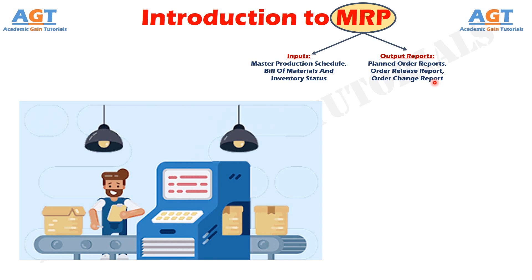Just-in-time is a manufacturing system in which work-in-process inventories are reduced to minimum levels. Small quantities of materials are supplied by the suppliers to the assembly line directly with the aid of visual Kanban cards.